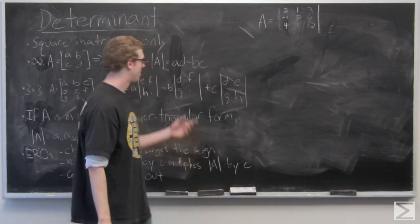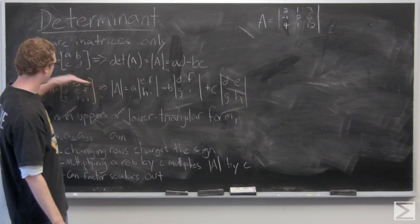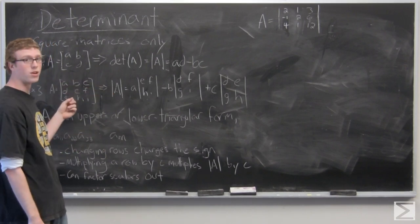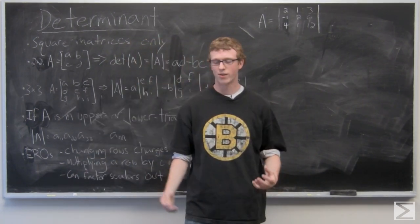And then you're going to add C, and then you're going to cross out the rightmost column, topmost row. So you're looking for C times DEGH. So that's the determinant of a 3x3 matrix.